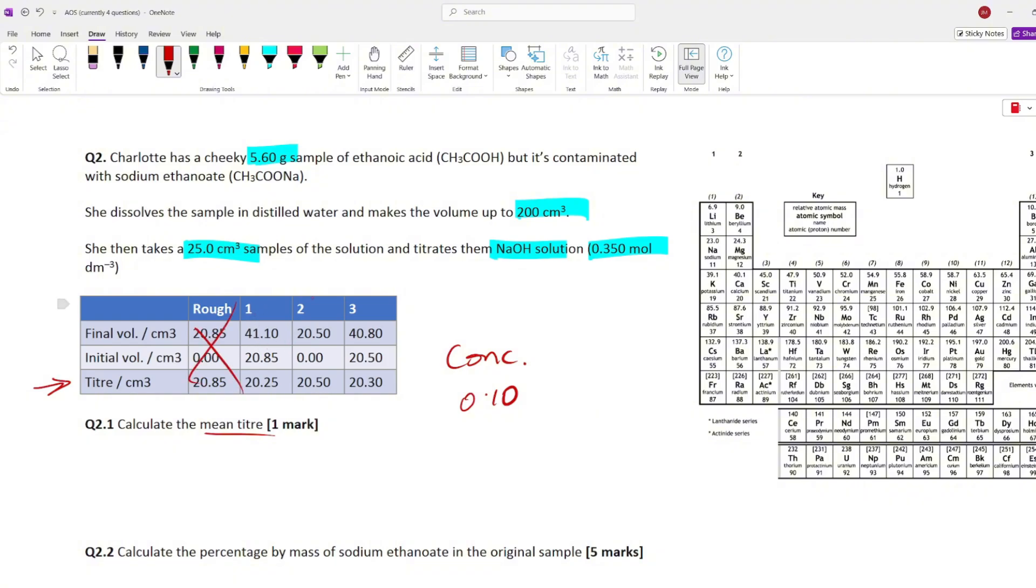Ignore the rough. So, we're looking at the three different trials that she ran this titration. So, if we're looking for concordant, they have to be within 0.1 of each other. What is that going to be? We can only use this and this, scrap number two. So, what you would do is you would just do your average. You add together and then divide by the total number of things that you're adding together. In this case, it's two.